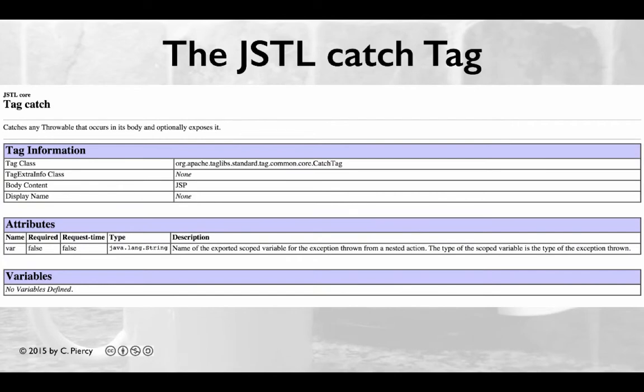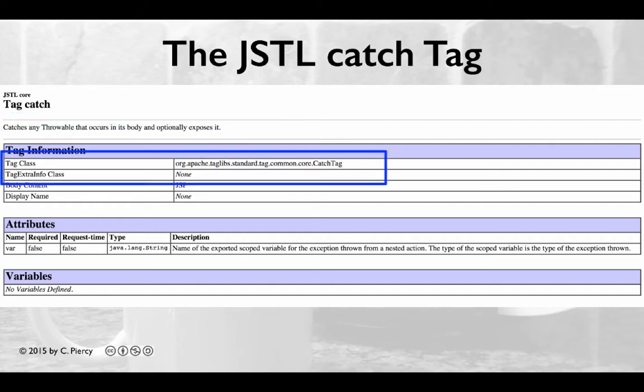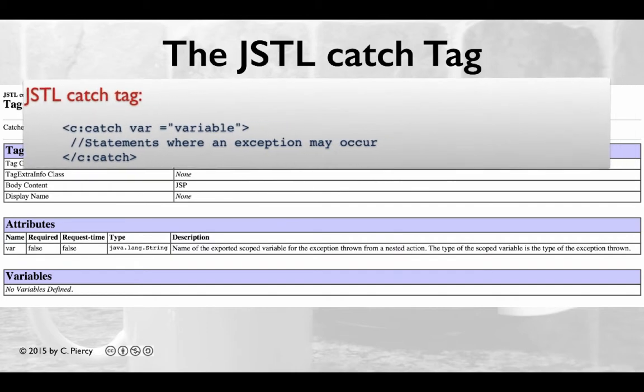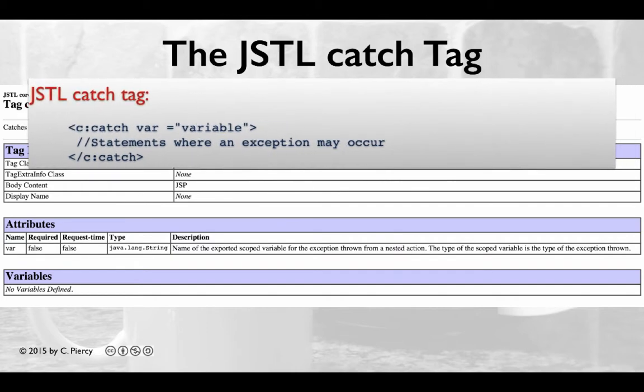First, let's discuss the JSTL catch tag. Here's the documentation page for the catch tag. The catch tag is used for exception handling. Note that the tag has one attribute, var. The variable can be any variable in which an exception message would be stored. If there is an exception, then this variable contains the exception message. The general format of the catch tag is shown here.